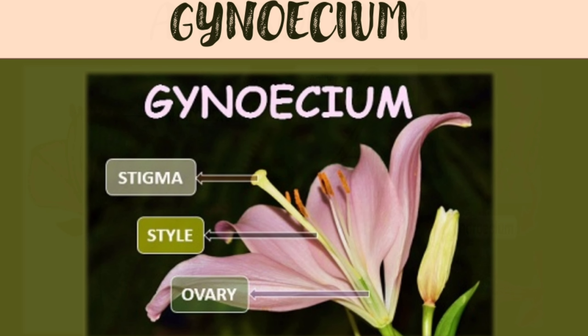The gynoecium is the female reproductive part of the flower, made up of carpels. A carpel consists of stigma, style, and ovary. The upper part is the stigma, the middle part is the style, and the part below the style is the ovary.